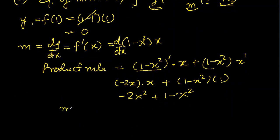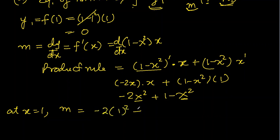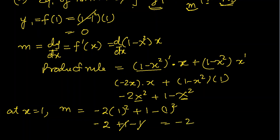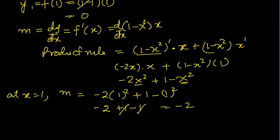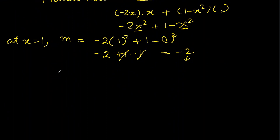Now m at x equal to 1: we substitute x with 1 into minus 2x squared plus 1 minus x squared. It becomes minus 2 plus 1 minus 1. The 1 and minus 1 cancel out, giving m equal to minus 2. We need the negative reciprocal for the normal, so the negative reciprocal of minus 2 will be the gradient of the normal.